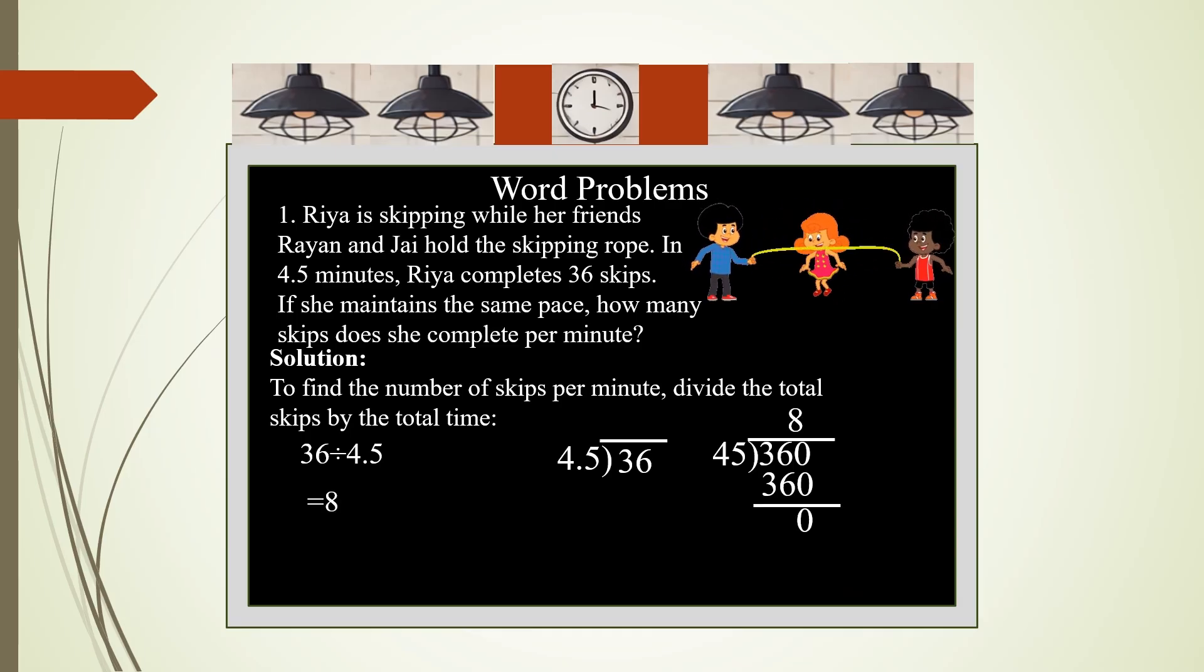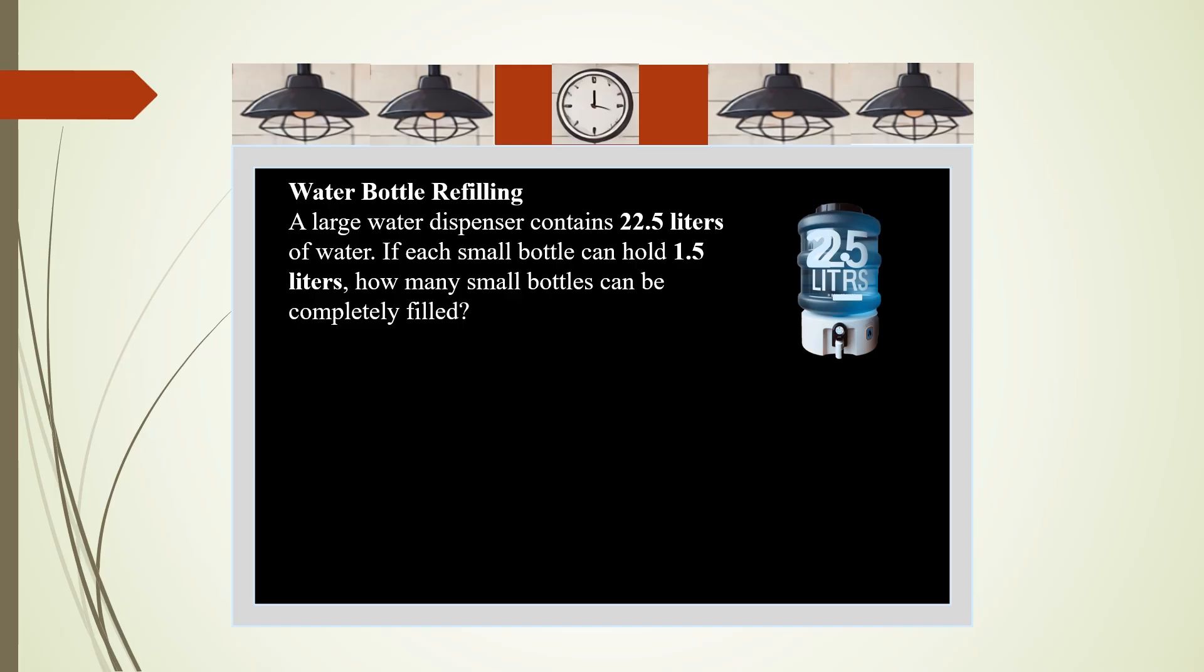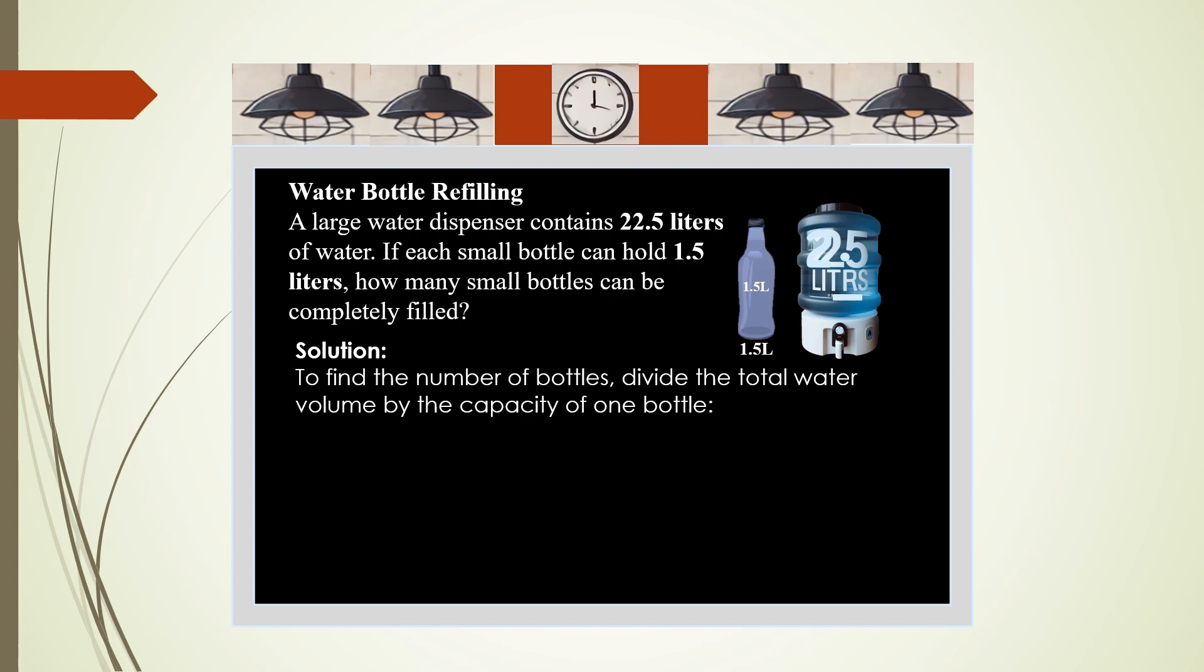A large water dispenser contains 22.5 liters of water. If each small bottle can hold 1.5 liters, how many small bottles can be completely filled? To find the number of bottles, divide the total water volume by the capacity of one bottle: 22.5 divided by 1.5. You can do this division. Since both are having only one place of decimal, it is same as 225 divided by 15. 15 times 15 is 225, so 15 bottles can be completely filled with water.